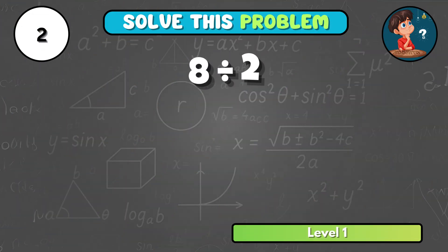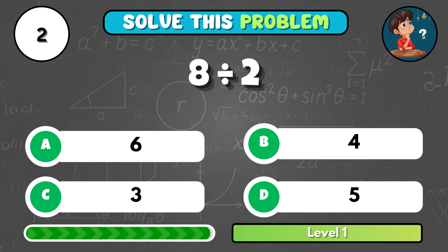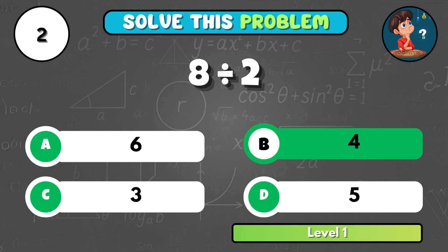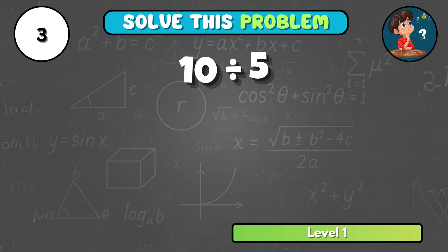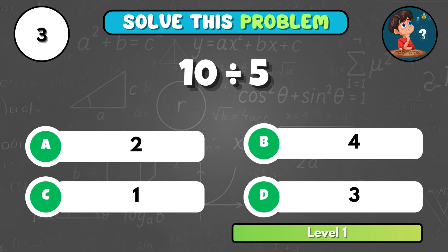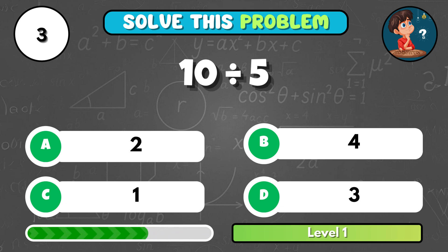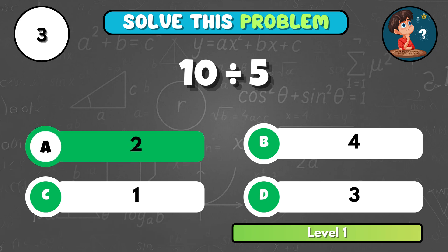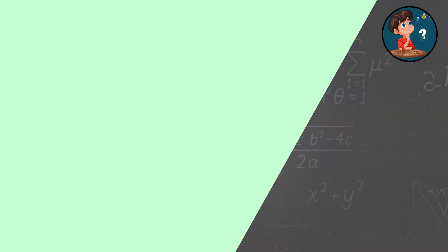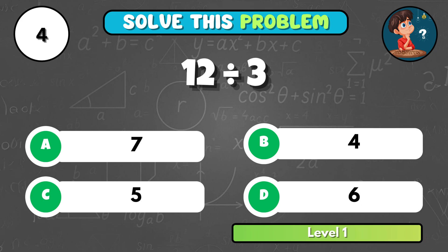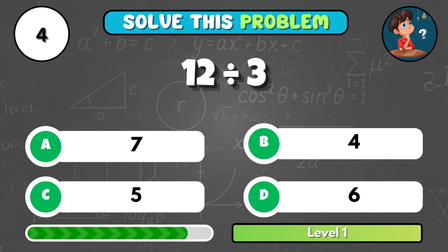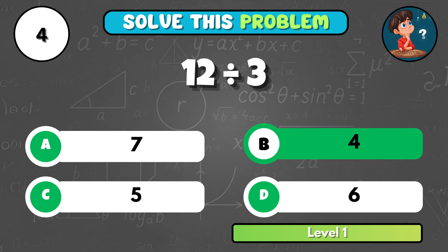Can you find eight divided by two? It's B, four. Tell me, what's ten divided by five? That's A, two. Quick one — what is twelve divided by three? The answer is B, four.